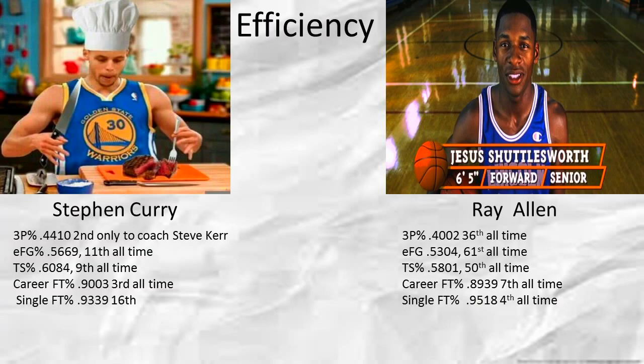Moving to percentages, we really see the brilliance of these two players. In three-point percentage, Curry shoots 44%, which is second all time, only to coach Steve Kerr. Ray Allen shoots at 40%, good for 36th all time. In effective field goal percentage, which takes into account that threes are worth more than twos, Curry shoots 56.69%, good for 11th all time, while Ray Allen shoots 53.04%, good for 61st all time.